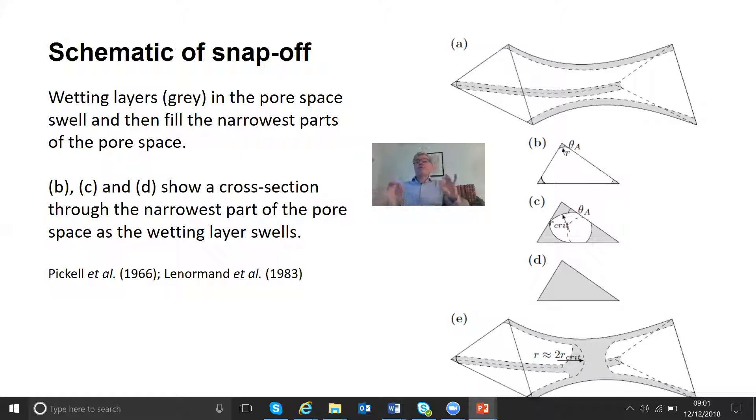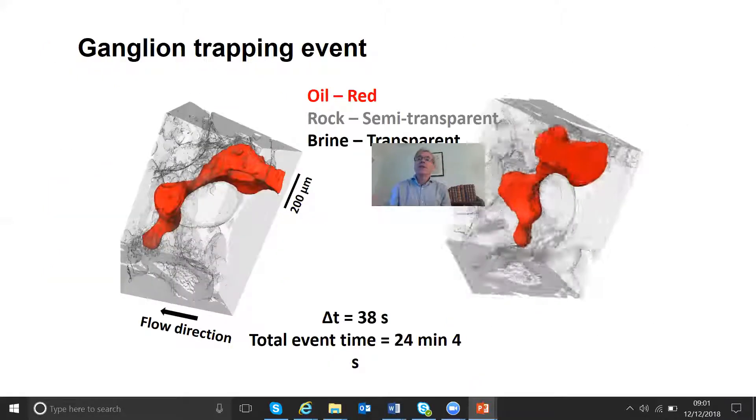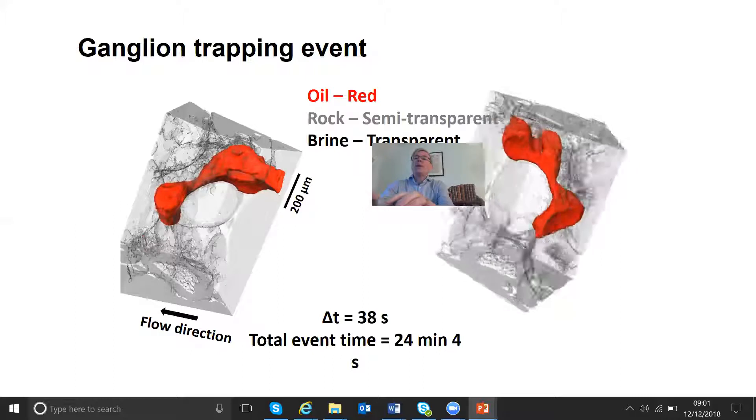So that's a schematic of the process relatively quickly so you can sort of understand what's going on. Now what we're going to do is go back to those x-ray images. But we're going to zoom in on a single region of the pore space and observe this process. So here we have a trapping event.